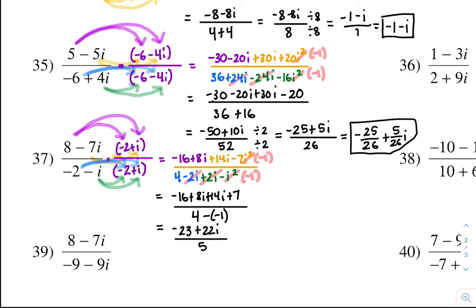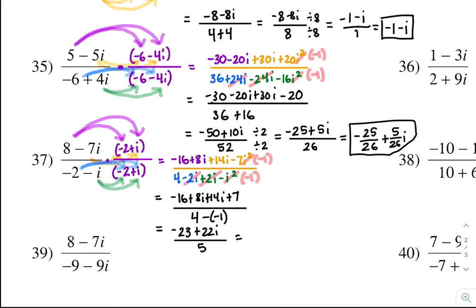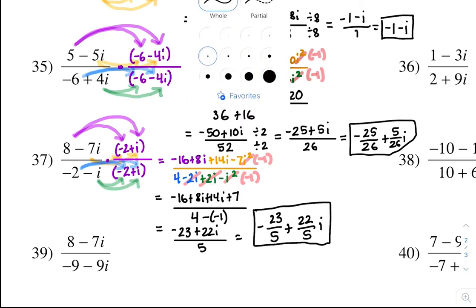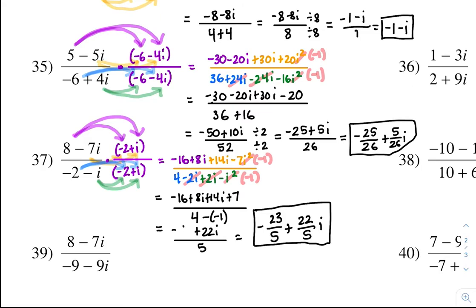All over 5. Can't simplify any further, so split it up to get into a plus bi form: negative 9 over 5 plus 22 over 5i. This just takes a lot of practice — as you keep at it, it does get easier. I just realized I made a mistake: in the numerator, negative 16 plus 7 is supposed to be negative 9, so the answer is negative 9 over 5 plus 22 over 5i.